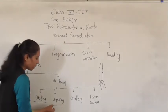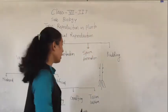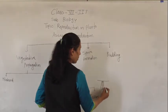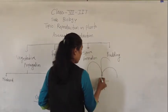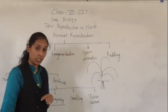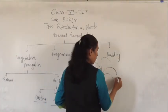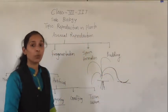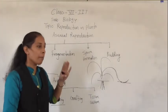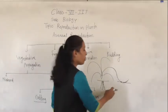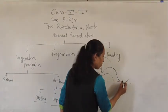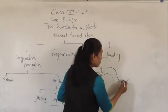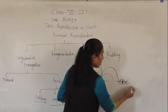The next method is layering. In layering, there is a plant with many branches. Among one of those branches, some portion of the stem or branch is covered with soil. But importantly, before covering the branch with soil, we should remove the bark of that stem or branch. After that, we cover this portion with soil.